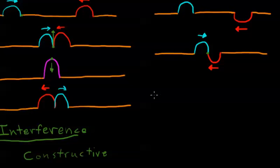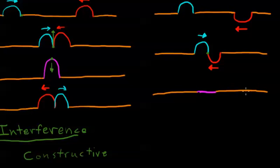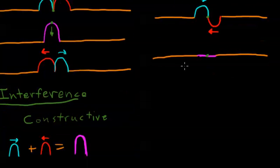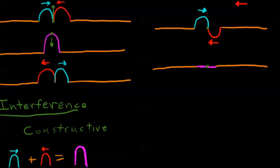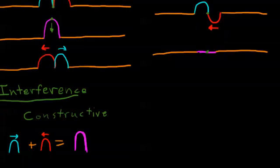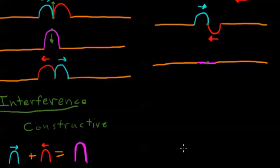If we continue through time we end up with a situation where the string is completely flat. Our center point still hasn't gone anywhere and the whole string is flattened out. So what's happened here — have these two wave pulses, since their pieces of string were moving in opposite directions, just destroyed each other? Or will something happen where they re-emerge and continue on as if nothing happened, like in the previous example? I'd encourage you to pause and think about what's happening.